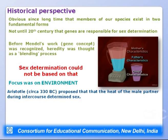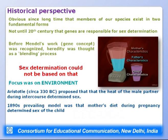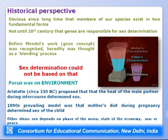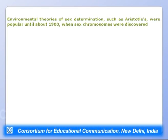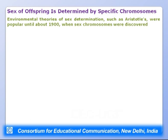Initially, the focus was on environment. Around 330 BC, Aristotle proposed that heat of the male partner during intercourse determines sex. In the 1890s, the prevailing model was that the mother's diet during pregnancy determined the child's sex. Ideas such as the phase of the moon, the state of the economy, and war or peace times were also proposed. Environmental theories of sex determination prevailed until sex chromosomes were discovered in the 1900s.